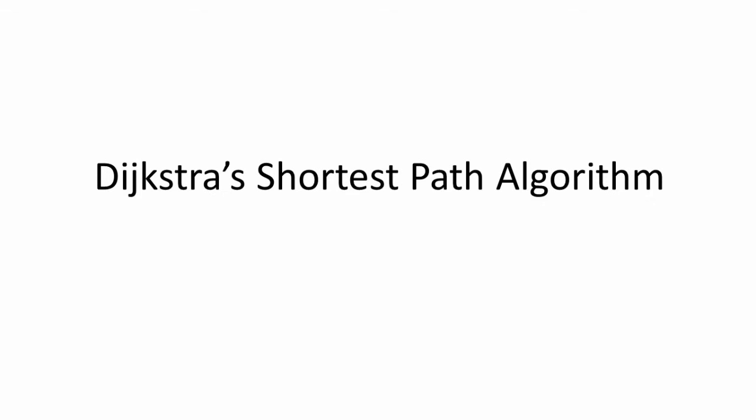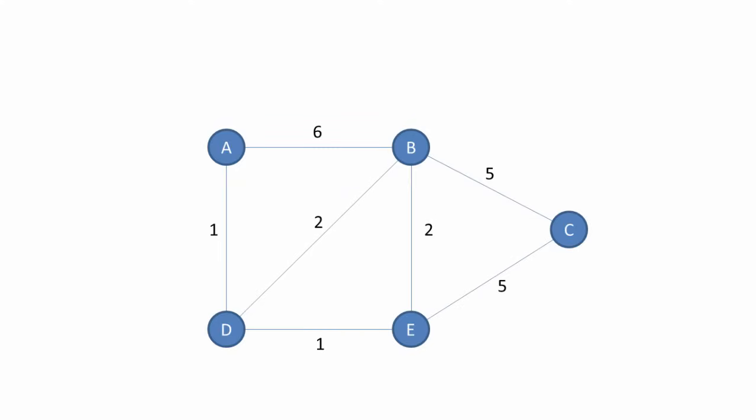Dijkstra's shortest path algorithm was invented by the late great Edsger Dijkstra, a famous Dutch computer scientist. The objective of the algorithm is to find the shortest path between any two vertices in a graph. In fact, Dijkstra's algorithm will find the shortest path from a given starting vertex to every other vertex in the graph.